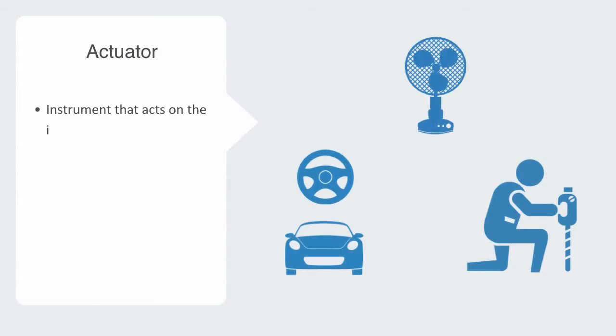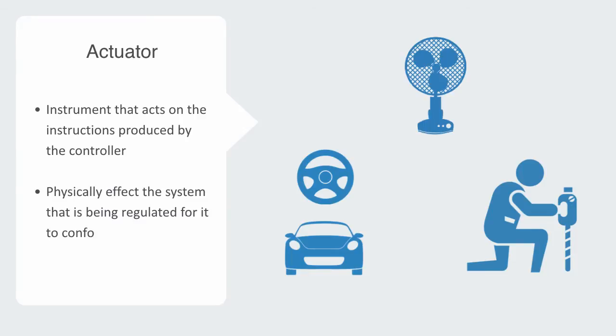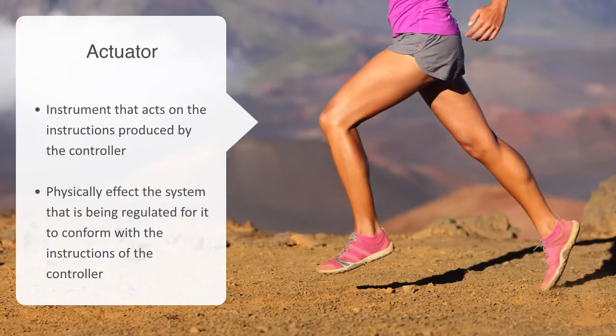Lastly, the actuator. An actuator is an instrument or set of instruments that act on the instructions produced by the controller. It is designed to physically affect the system that is being regulated in order for it to conform with the instructions produced by the controller. An example of an actuator might be the muscles in the human body. They are controlled by electrical signals sent from the brain. We can actuate them in order to change the state of our environment by simply moving from one location to another. The brakes on your car are another example of an actuator. They execute or act on your instructions to regulate the speed of the car.